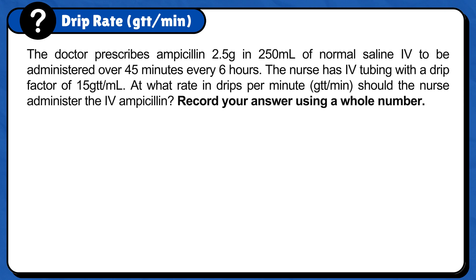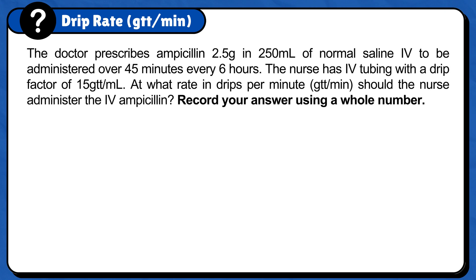The doctor prescribed ampicillin 2.5 grams in 250 milliliters of normal saline IV to be administered over 45 minutes every 6 hours. The nurse has IV tubing with a drip factor of 15 gtt per milliliter. At what rate in drips per minute should the nurse administer the IV ampicillin? Record your answer using a whole number.